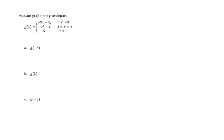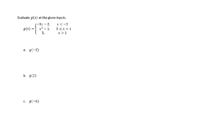We are given the piecewise function g of x, and we want to evaluate g of x at three given inputs. Let's start with g of negative three. We see negative three twice when looking at our different domains. The first step when evaluating piecewise functions is to identify which function is defined on the domain that includes our input value, x equals negative three.